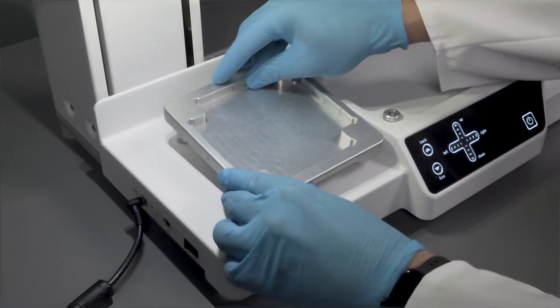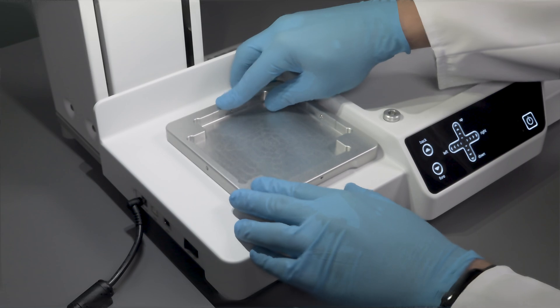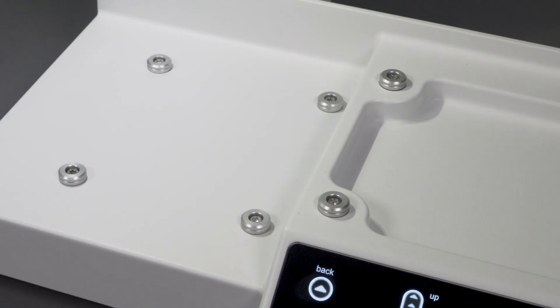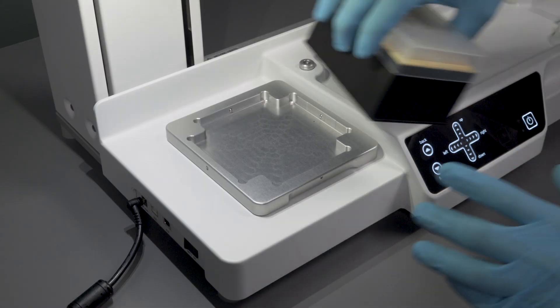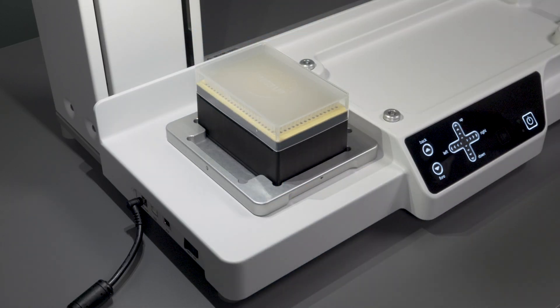To set up the instrument, first place the tip rack deck on the left side of the instrument. Please make sure that the deck is firmly attached to the base unit. On this position, Integra's grip tips are accommodated.